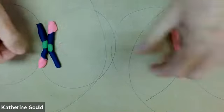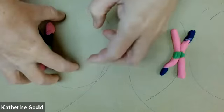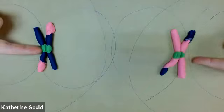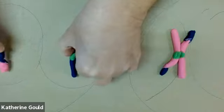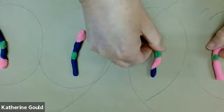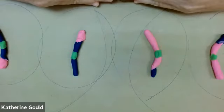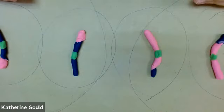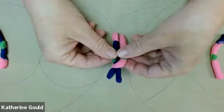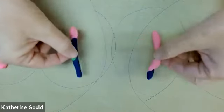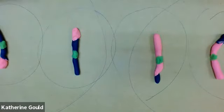In prophase 2, chromosomes come to the center of the cell and the nuclear envelope starts to break down. In prometaphase 2, spindle fibers attach. In anaphase 2, sister chromatids separate. In telophase 2 and cytokinesis 2, we end up with four daughter cells, each with half the original DNA. So we started out with cells that had two of each chromosome. They were diploid. We end up with cells that have one of each chromosome. They are haploid. And that is the process of meiosis.